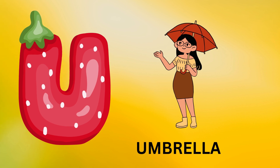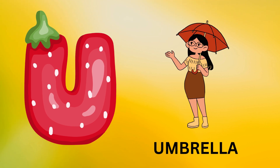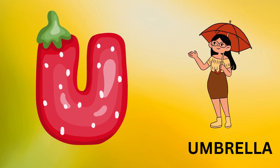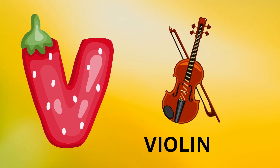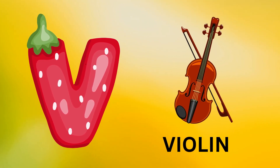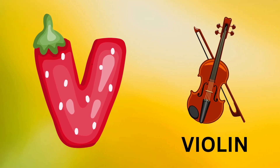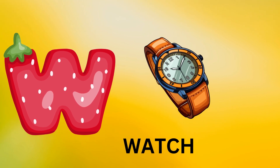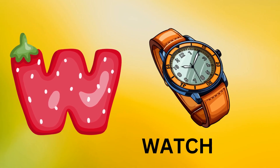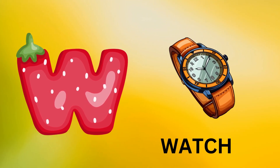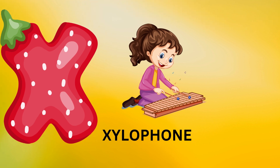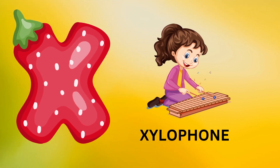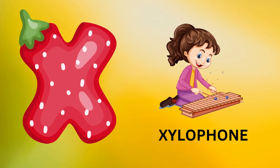U is for umbrella, u-u-umbrella. V is for violin, v-v-violin. W is for watch, w-w-watch. X is for xylophone, x-x-xylophone.